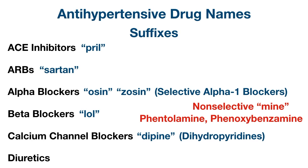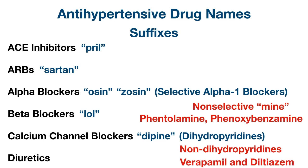There are two main types of calcium channel blockers: dihydropyridines and non-dihydropyridines. Generally speaking, dihydropyridines are used more for hypertension as they target blood vessels, while non-dihydropyridines such as verapamil and diltiazem are used more for tachydysrhythmias as they target the heart. Since dihydropyridines are used more for blood pressure, we'll focus on those in this video, but just know the suffix -dipine applies to the dihydropyridine calcium channel blockers.